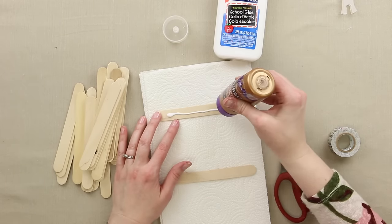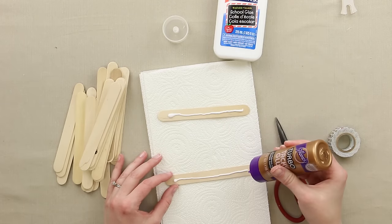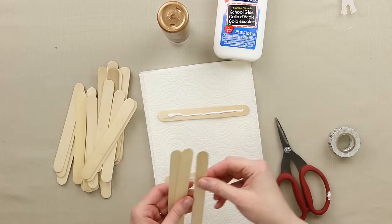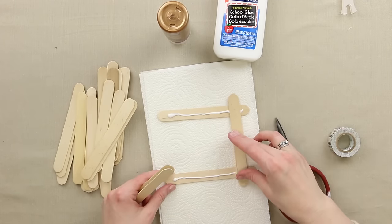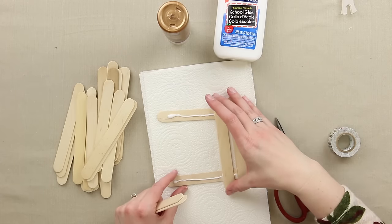All they have to do is put a bead of glue down their popsicle stick and then they're just going to start building the bottom of their raft and laying in their sticks.